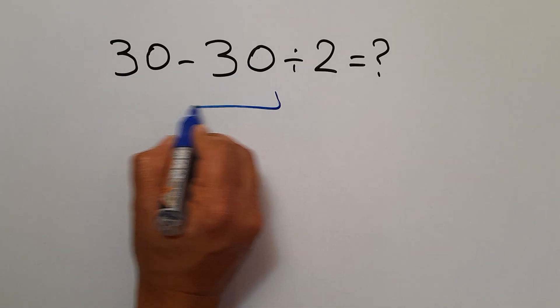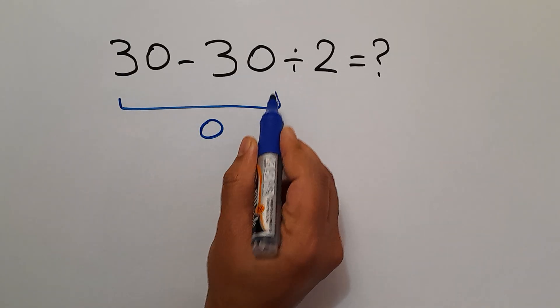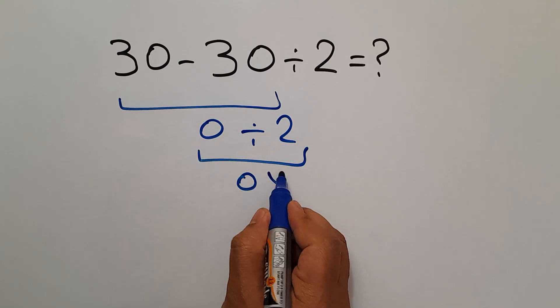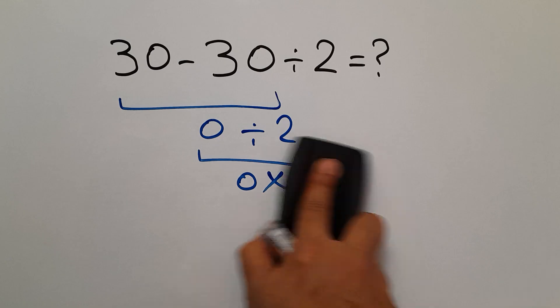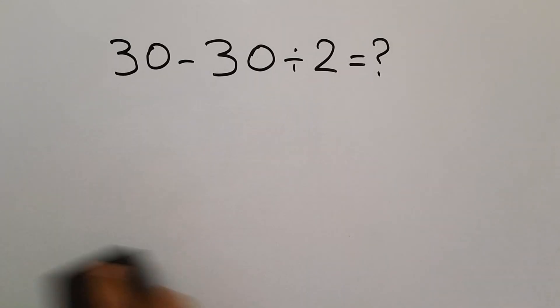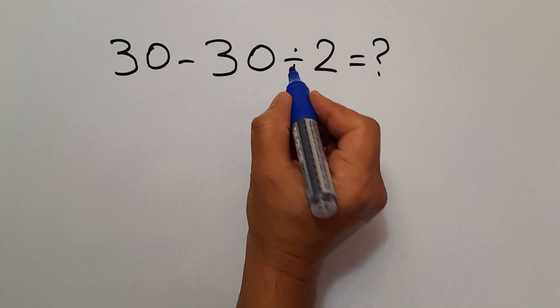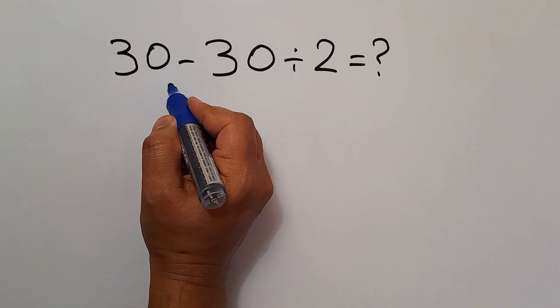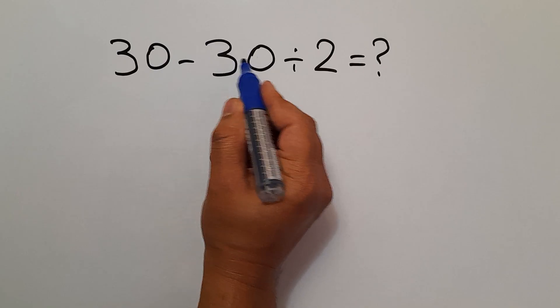30 minus 30 equals 0, and 0 divided by 2 which equals 0. But this answer is not correct because according to the order of operations, which is PEMDAS, division has higher priority than subtraction. So first we have to handle this division.